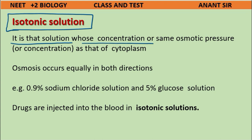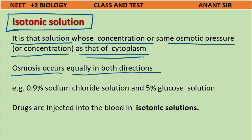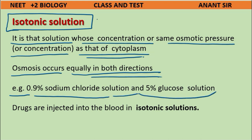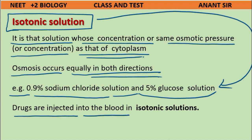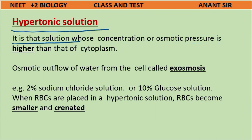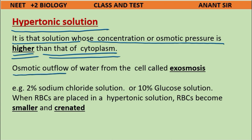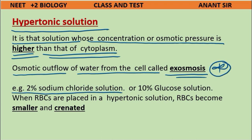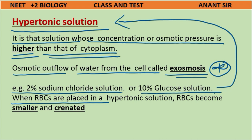An isotonic solution has the same osmotic pressure or concentration as that of the cytoplasm — osmosis occurs equally in both directions. Examples: 0.9% sodium chloride solution and 5% glucose solution. Drugs are injected into the blood in isotonic solution. A hypertonic solution has a higher concentration or osmotic pressure than the cytoplasm, causing osmotic outflow of water from the cell (exosmosis). Examples: 2% NaCl or 10% glucose. When RBCs are placed in hypertonic solution, they become smaller and crenated.